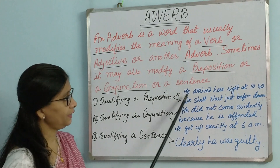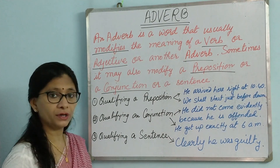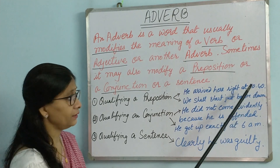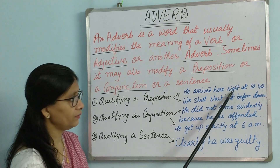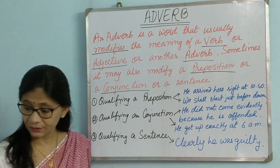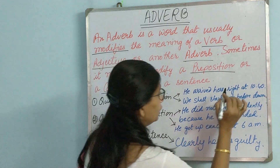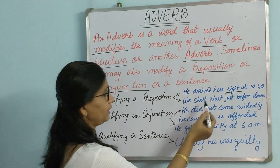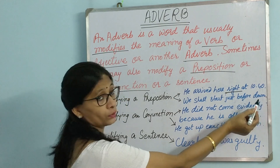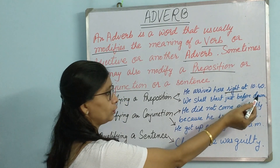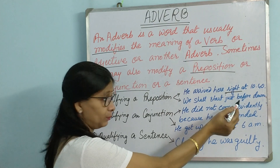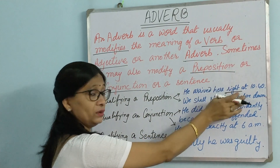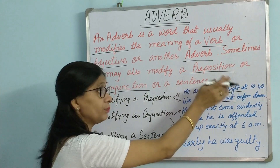Now let us see how an adverb qualifies a preposition. For example: 'He arrived here right at 10:40.' Here, 'at' is a preposition and the word coming just before it — 'right' — is an adverb qualifying the preposition. Second sentence: 'We shall start just before dawn.' Here, 'before' is the preposition and 'just' is the adverb. So the adverb is qualifying or saying something about the preposition.